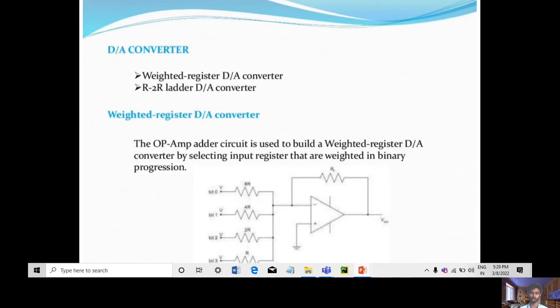DAC converter is basically two types: weighted register DAC converter and R-2R ladder DAC converter.